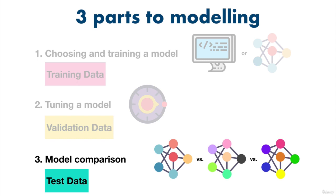By generalizing, I mean adapts to data it hasn't seen before, such as how our heart disease prediction machine learning model would perform at classifying whether a patient has heart disease or not on a patient who wasn't in our original data set.